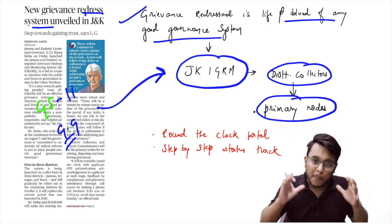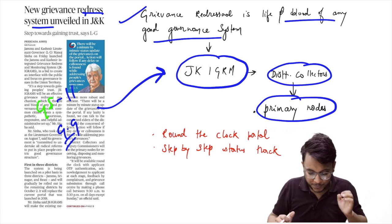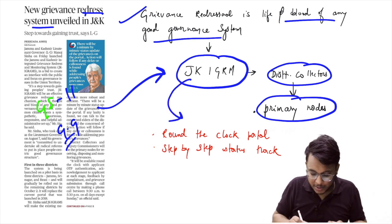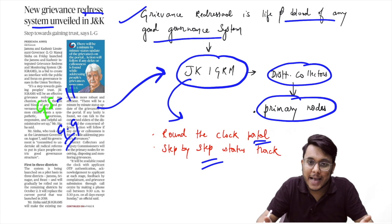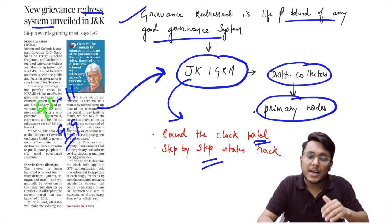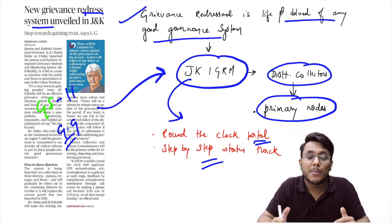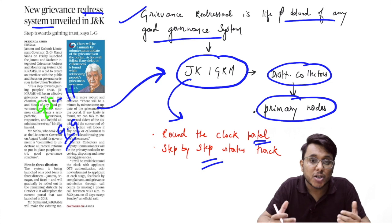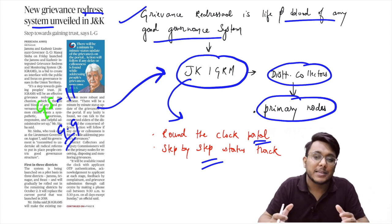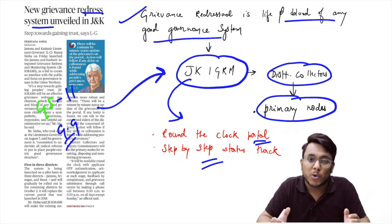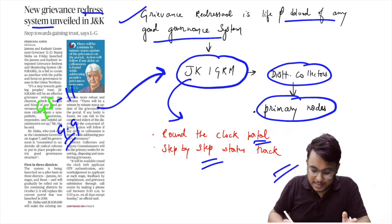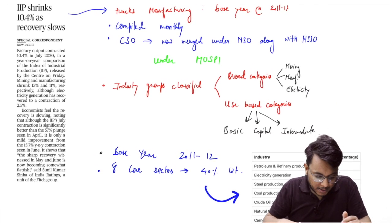This portal will be a round-the-clock portal where citizens can step-by-step check where their complaint has reached and what action is being taken. In the context of Jammu and Kashmir, this not only brings good governance but also helps restore the estranged population's confidence in the government's capabilities, which will help restore law and order. A very good example you can utilize in your answers.